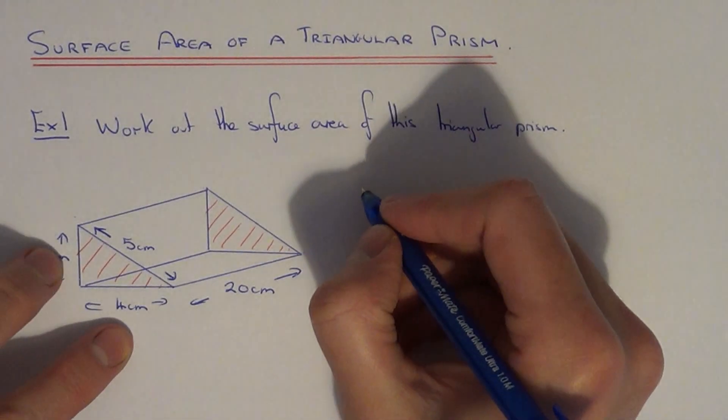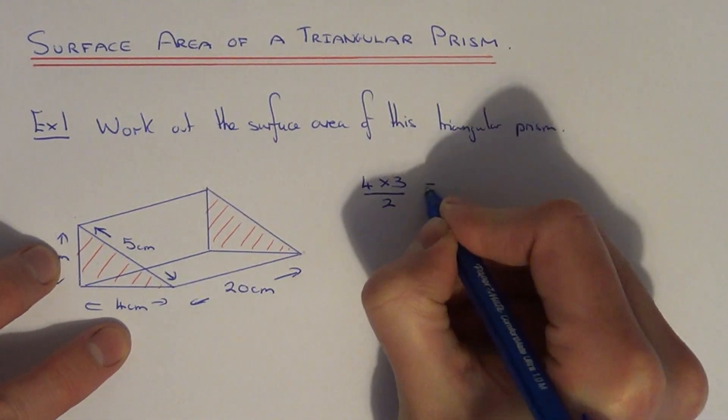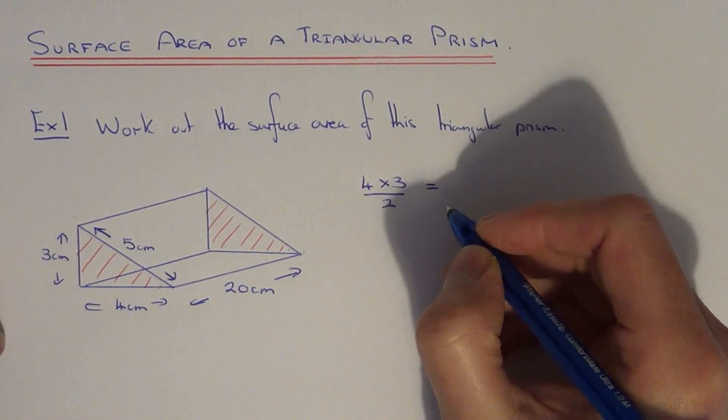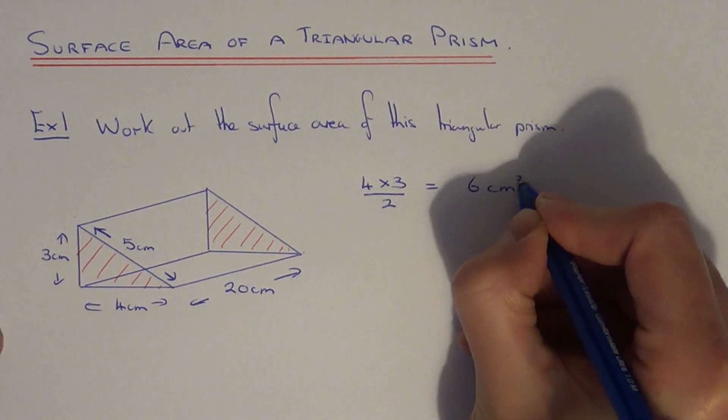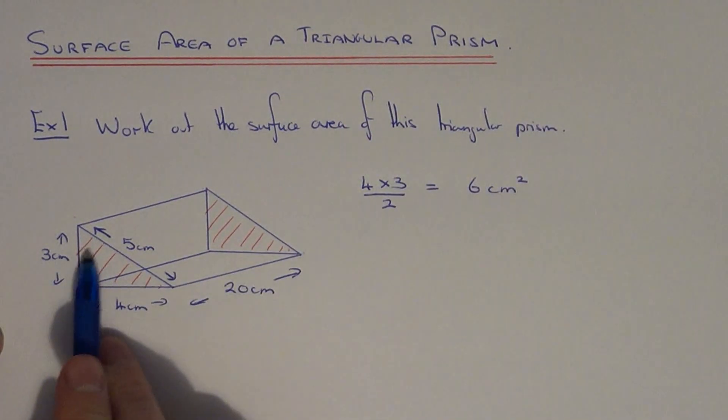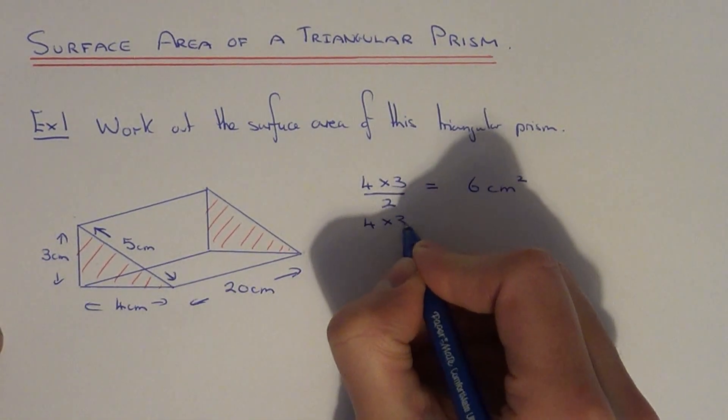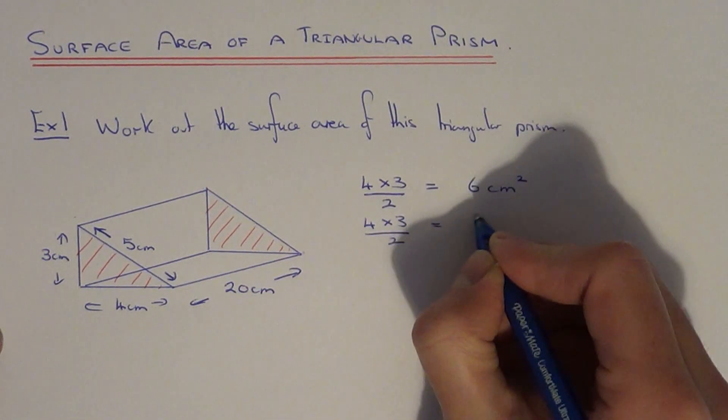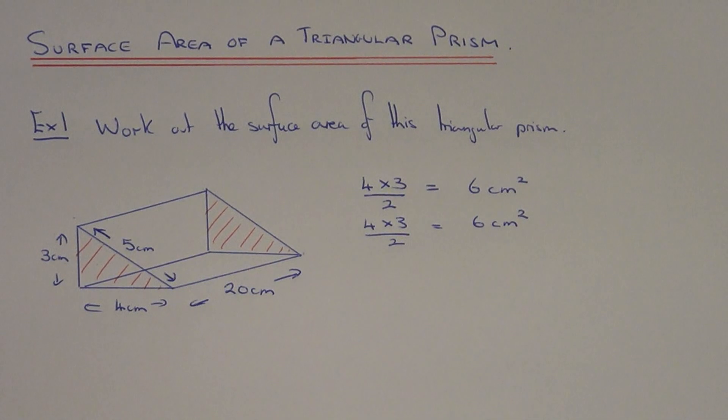So we're going to do 4 times 3 and divide this by 2. So 4 times 3 is 12 divided by 2 is 6 cm squared. So this triangle here has the same area as the back of the triangle. So if I copy this one down again. So that's our two triangular faces done.